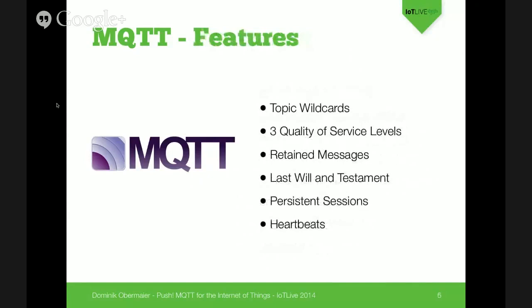Let me talk about some of the cool features of MQTT that you get for free. We have topic wildcards — as with many pub-sub architecture systems, we have a decoupled system where clients agree on topics, and with MQTT you have wildcards so you're very flexible when subscribing to certain messages. We have three quality of service levels. The client can specify how important it is that a message arrives. You can say it doesn't matter if the message arrives, or that it's a business-critical message that has to arrive exactly once.